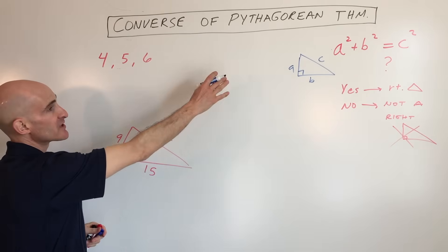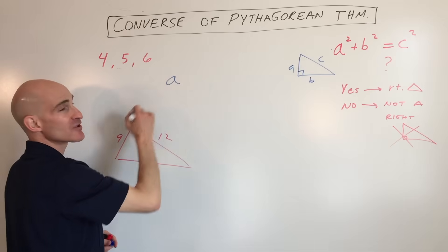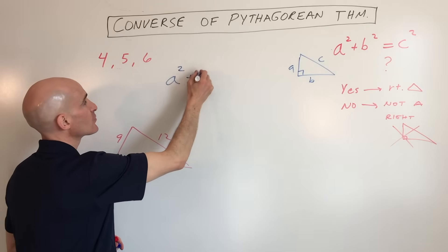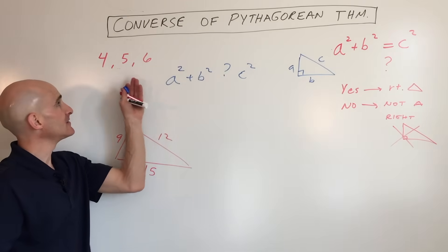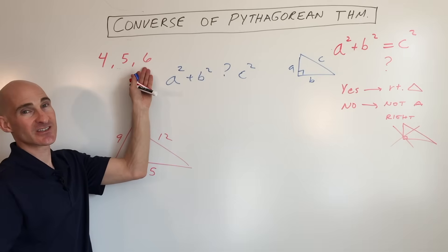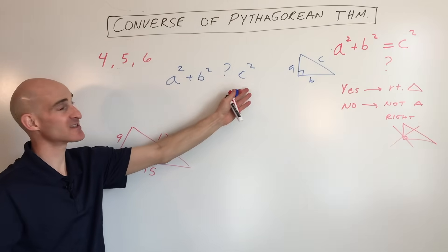But now what we're going to do is we're going to test the converse of the Pythagorean Theorem. So A squared plus B squared, question mark, C squared. Now, which one's C? Is it 4, 5, or 6? Well, it's 6. 6 is going to be the longest one. That's the one we're testing to see is the hypotenuse.